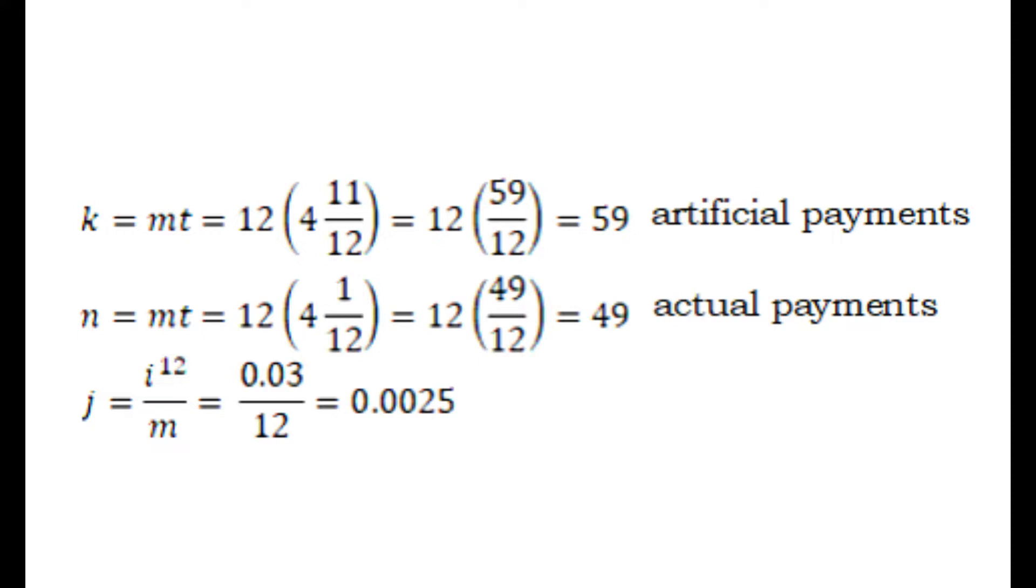Now you may directly press these numbers in your calculators and derive the answer. But if you would like to understand how it is solved manually, we'll go back to our elementary math. 4 and 11 over 12 is a mixed number. To convert it into an improper fraction, you have to multiply the denominator 12 by the whole number 4 and then add their product 48 to the numerator 11. 48 plus 11 is 59. That is why we have here 12 times 59 over 12. For the denominator, you just have to copy the denominator of the mixed number, which is 12. As you can see, 12 and 12 can be cancelled out. What is left is 59.